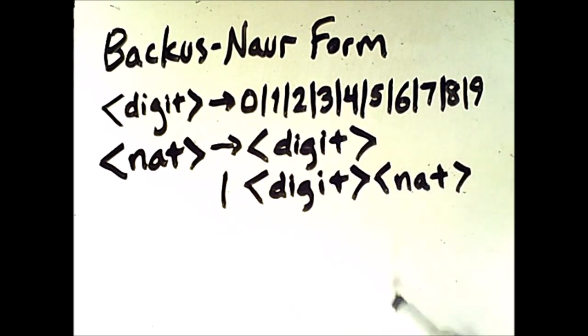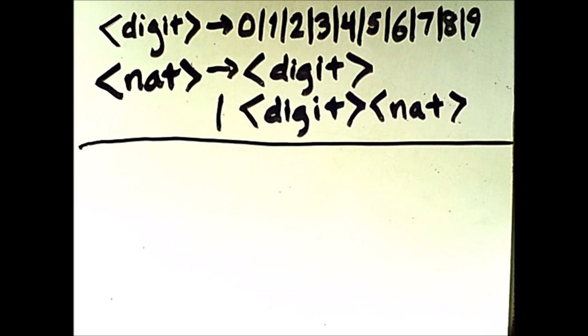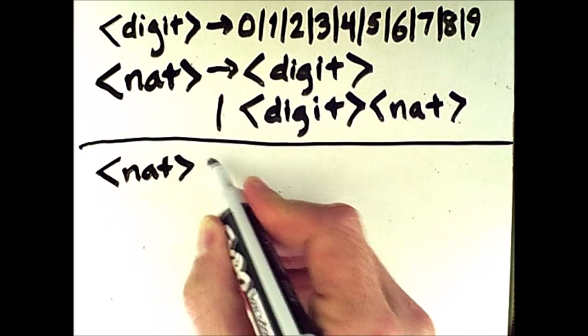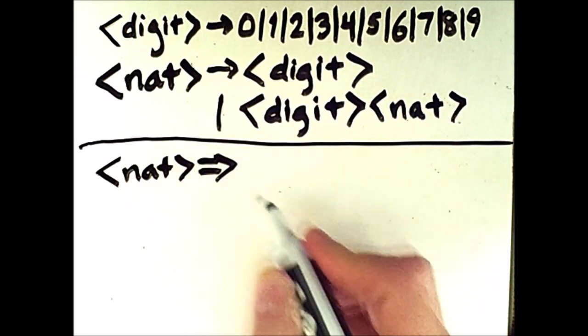These two rules allow us to create numbers of arbitrary length, as shown by the following derivation. A derivation starts with a given non-terminal, and then expands it one step at a time according to the rules.